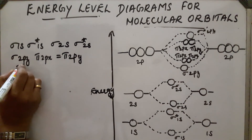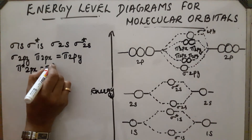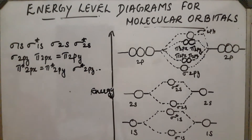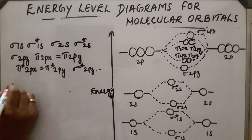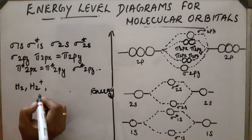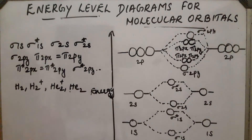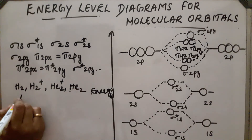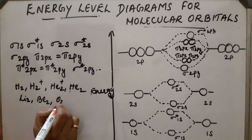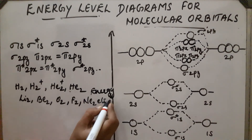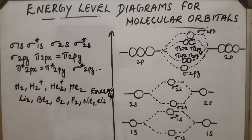Then pi* 2px and pi* 2py, then sigma* 2pz, and so on. This is the increasing energy order for homonuclear diatomic molecules like H₂, H₂⁺, He₂⁺, He₂, Li₂, B₂, O₂, F₂, N₂, etc. All these follow the same energy order. Some other molecules will follow a different order, which we will discuss after this.